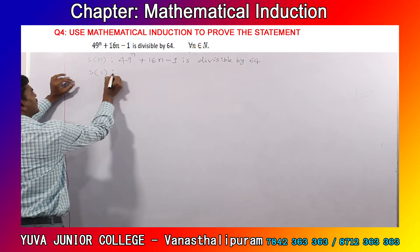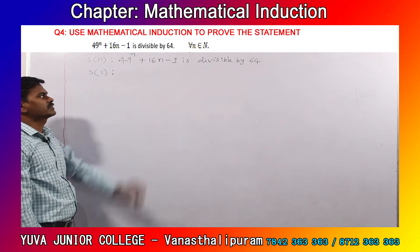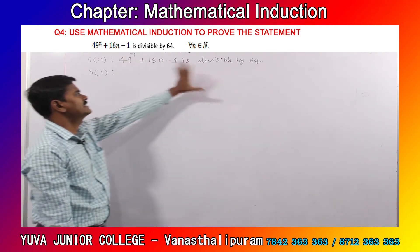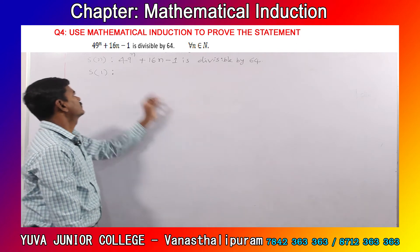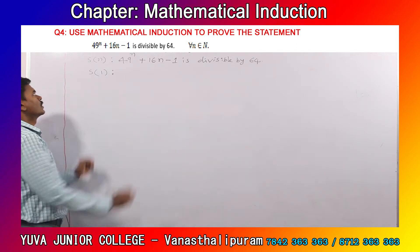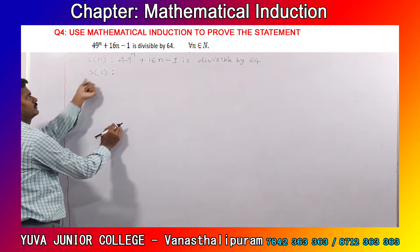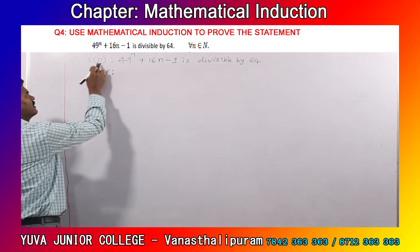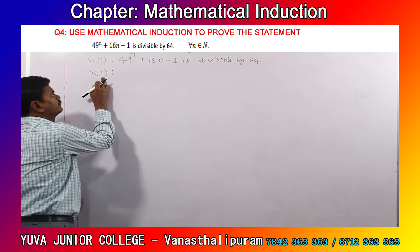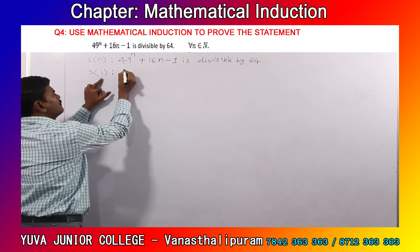So by using S of n, write S of 1. These are divisibility problems, so in divisibility problems we don't have any LHS or RHS — one statement will be given to be proved as true. The difference between S of n and S of 1 is that in place of n we have 1, so substitute n equals 1.